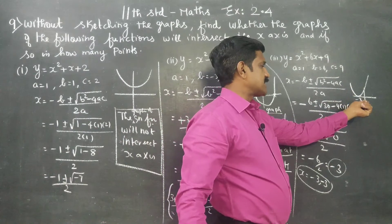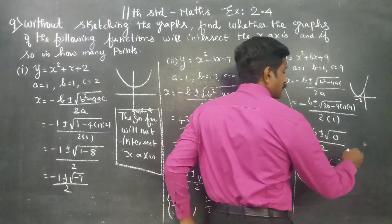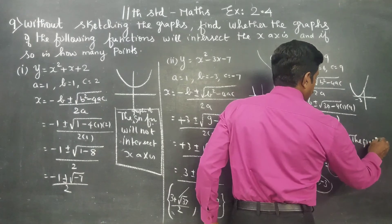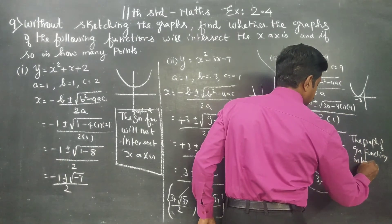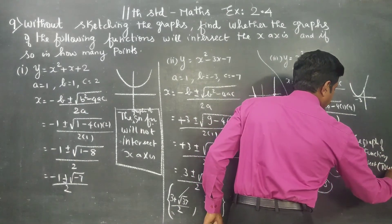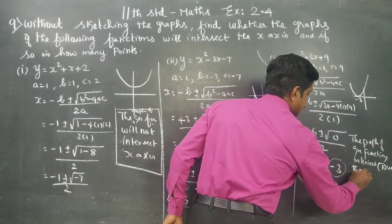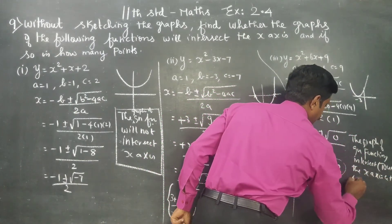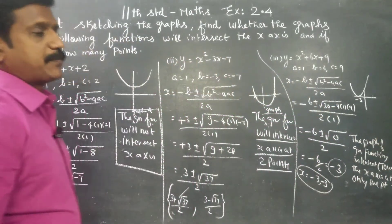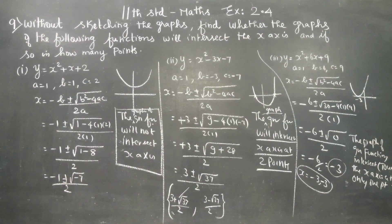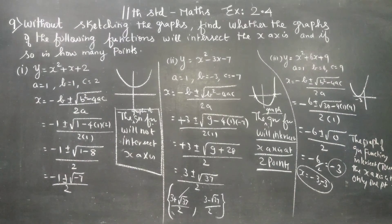The graph of the given function touches — or intersects — the x-axis at only one point, x equals minus 3. When both roots are equal (minus 3 and minus 3), the parabola touches the x-axis at exactly one point, rather than crossing at two distinct points.